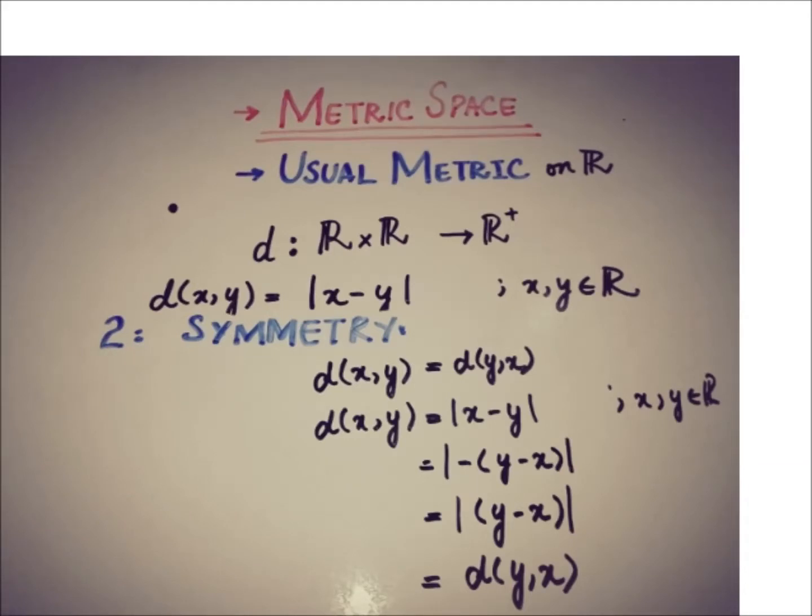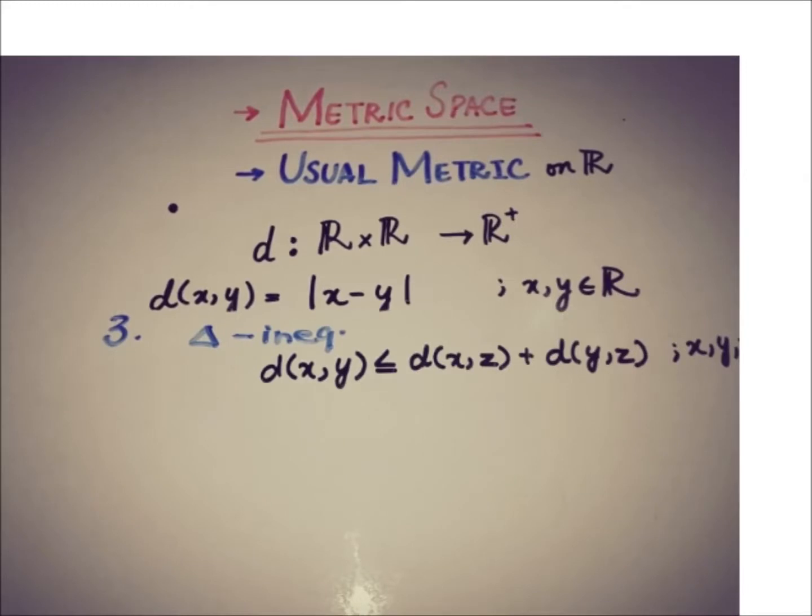Now proving the third property. So the third property is about triangular inequality, that the metric of x,y is less than or equal to the metric of x,z plus the metric of z,y where z is any point other than x,y where x, y, and z are all members of ℝ.